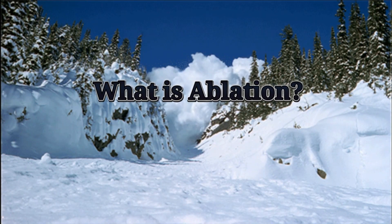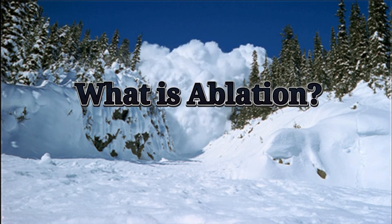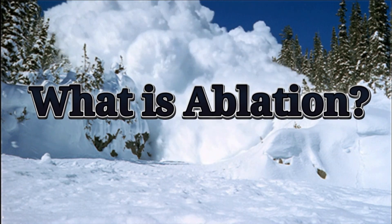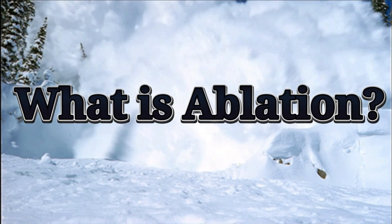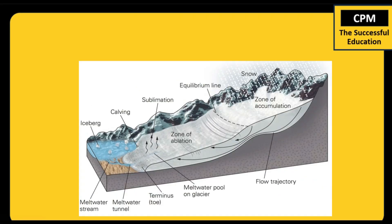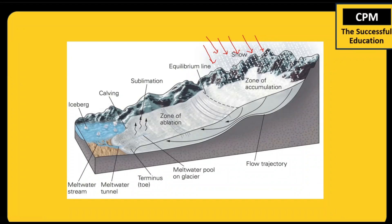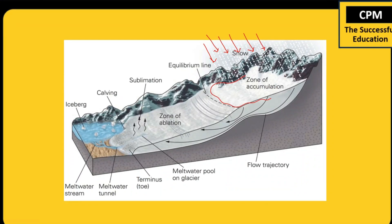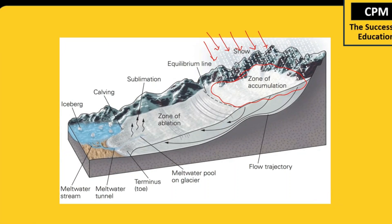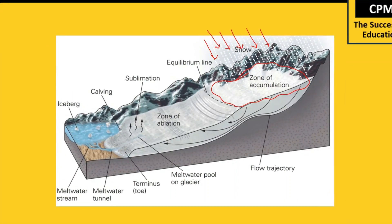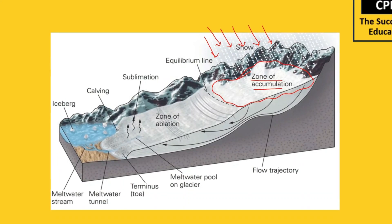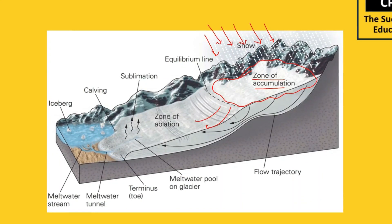What is ablation? Ablation, in general terms, is the melting of ice sheets. It can occur in very large areas. When snowfall starts accumulating snow in a large geographical area, that is known as a zone of accumulation. But what is ablation?